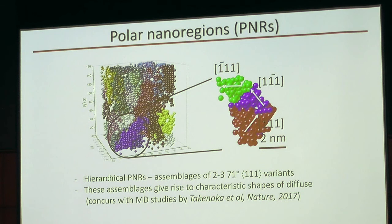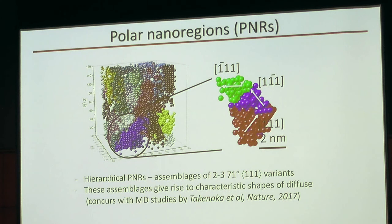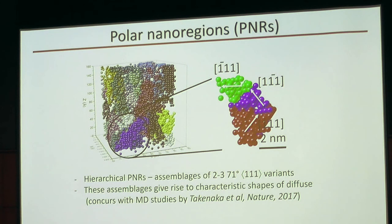We mapped the 1-1-1 displacements of lead — there are eight possible directions — onto these larger PNRs. We found that each PNR is an aggregate of two or three regions of smaller size. Within each region, displacements occur along a given 1-1-1 direction, and there was a very clear preference for adjacent regions to be 71-degree domain variants as opposed to 109-degree. This result agrees very well with recently published work from Andrew Rappe's group — Takenaka and co-authors — who observed a very similar picture from molecular dynamics, suggesting that what we see in both experiment and simulation is real.